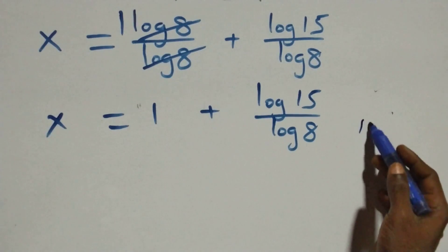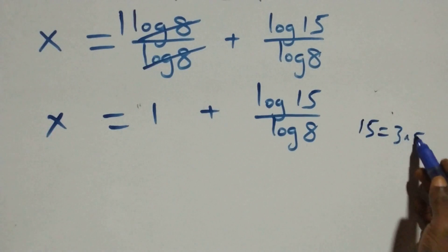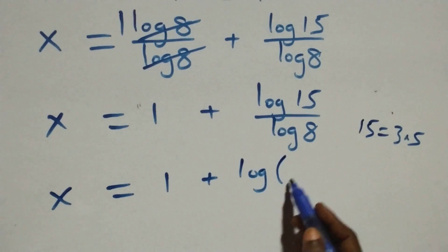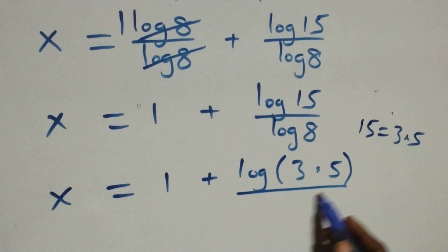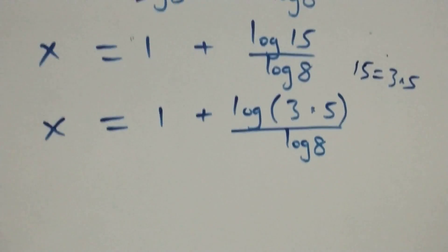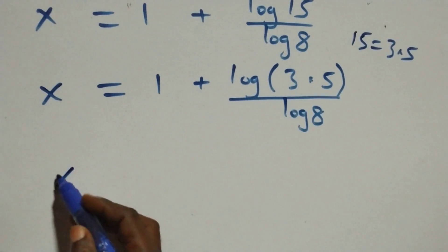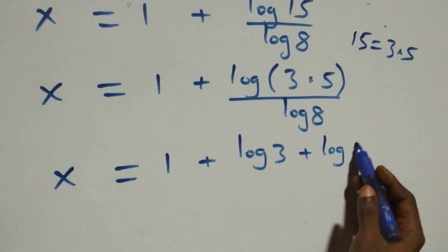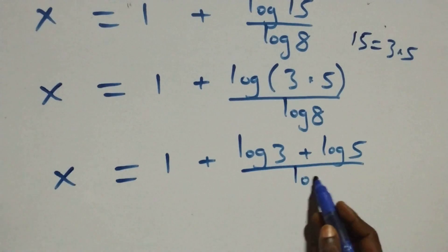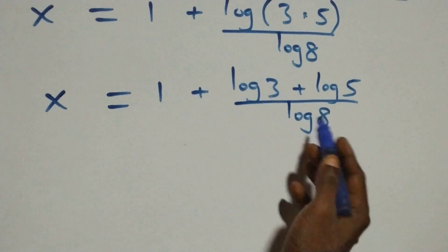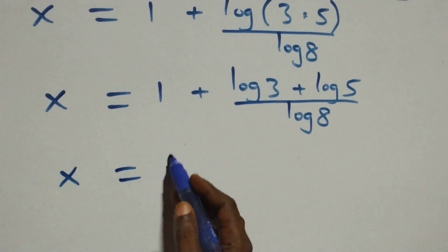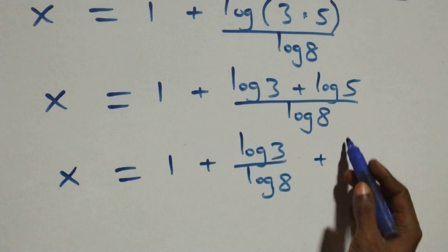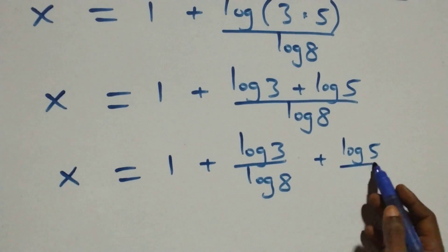From what we have, we can write 15 as 3 times 5. So all we have becomes x equals log(3 times 5) over log 8. Applying the product rule again, we separate this into two fractions: x equals 1 plus log 3 over log 8, plus log 5 over log 8.